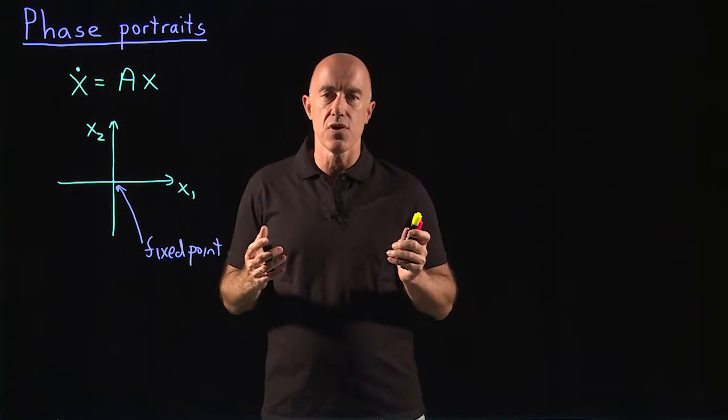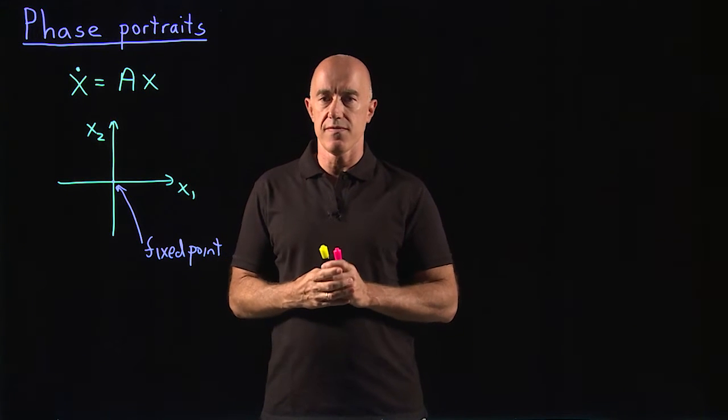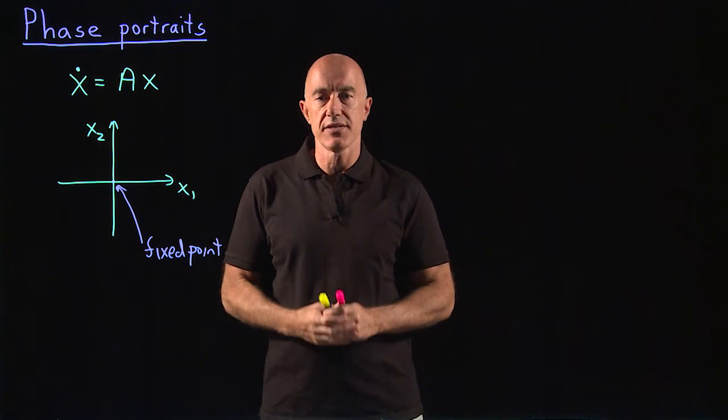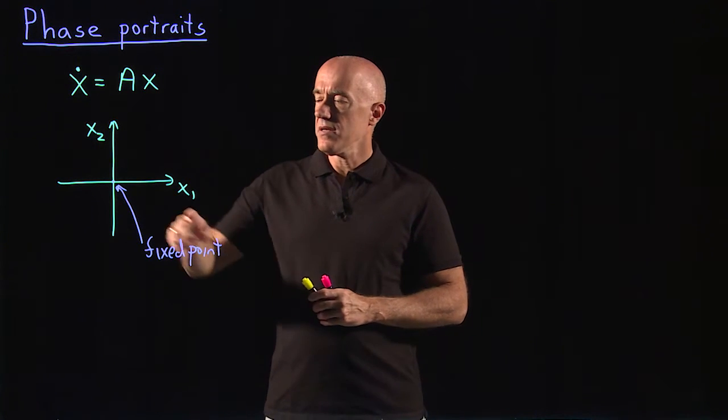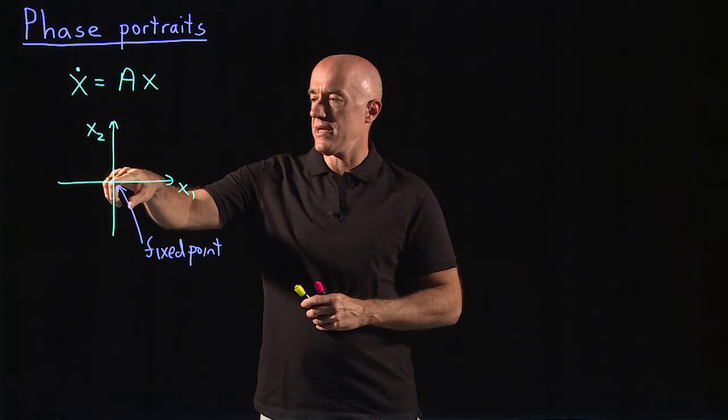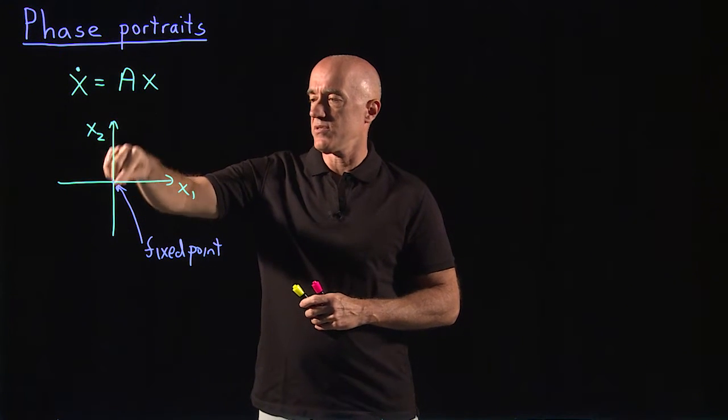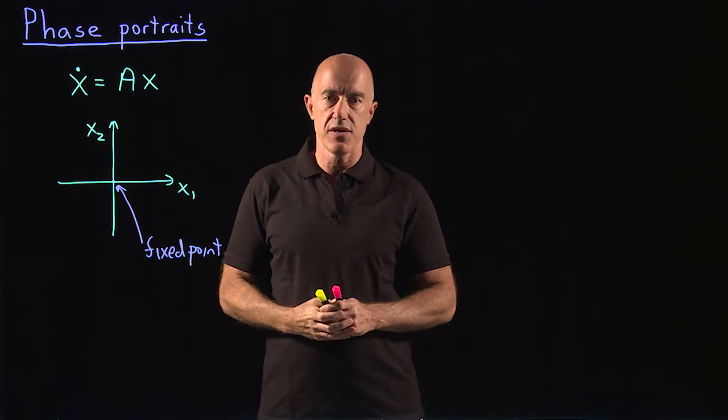It's also sometimes called an equilibrium point of the equation. An equilibrium point can be stable or unstable. So if an equilibrium point is stable, it means that all nearby solutions will be attracted to the equilibrium.